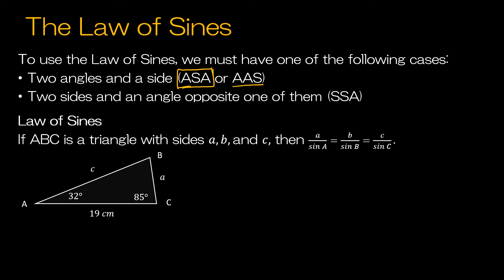The other condition is that we have two sides, but the angle that we know is opposite one of them. That's called side-side-angle. This one is a little bit tricky — it's got some instances where it doesn't work or it works more than once, and we'll go through those later. But let's take a look at our angle-side-angle example.